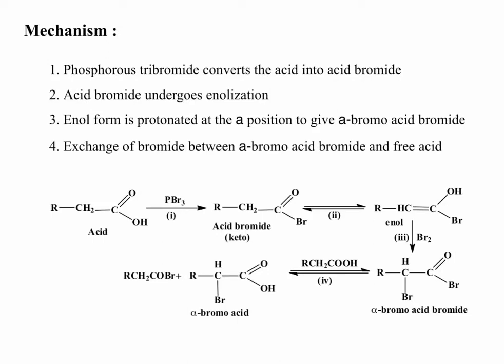Mechanism: four steps are involved in the HVZ reaction. In the first step, the acid converts to acid bromide by the action of phosphorous tribromide as the catalyst.